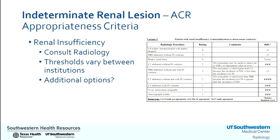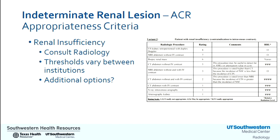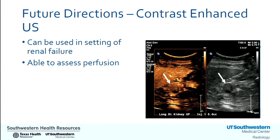For patients with chronic kidney disease and an indeterminate renal lesion, I strongly recommend consulting radiology. The ACR Appropriateness Criteria provides excellent guidelines, but these may vary between institutions — for example, biopsy of a renal mass is listed above MRI with and without contrast, but the threshold to give contrast varies by institution. There may also be other options available before pursuing an invasive procedure, such as contrast-enhanced ultrasound, which we are using increasingly at our institution in the setting of renal failure to evaluate indeterminate renal and liver masses. One of my colleagues will be speaking to you about this in detail.